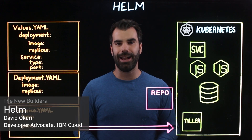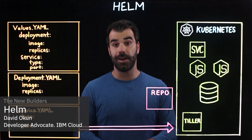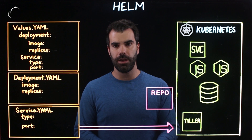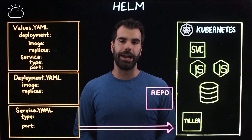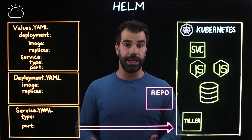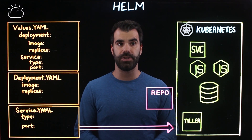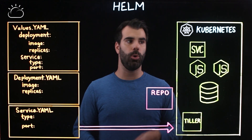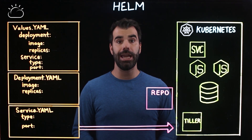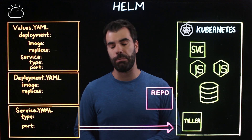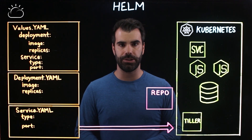Hey everybody, I'm David Okun with IBM Cloud and today we're going to talk about Helm. Helm is a package manager for Kubernetes that makes it easy to take applications and services that are highly repeatable or get used in a lot of different scenarios, and it makes it easier to deploy them to a typical Kubernetes cluster.